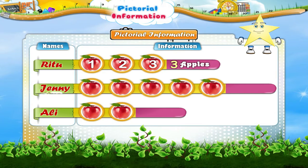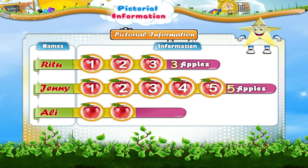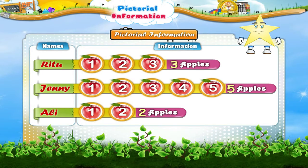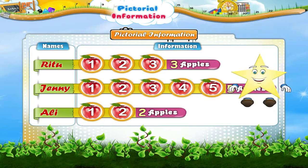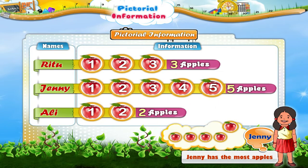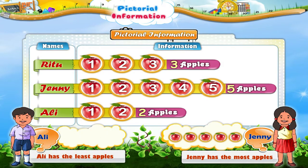Then comes Jenny. She has one, two, three, four, five — that is five apples. Ali has two apples. We can get even more information. Jenny has the most number of apples. Ali has the least number of apples.